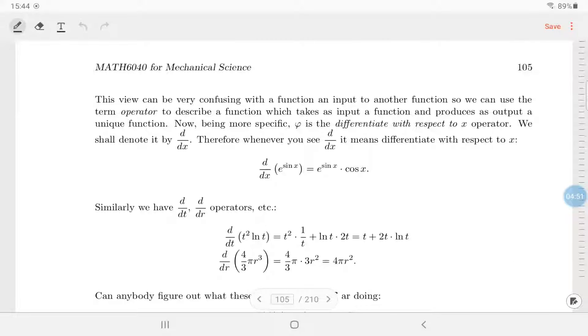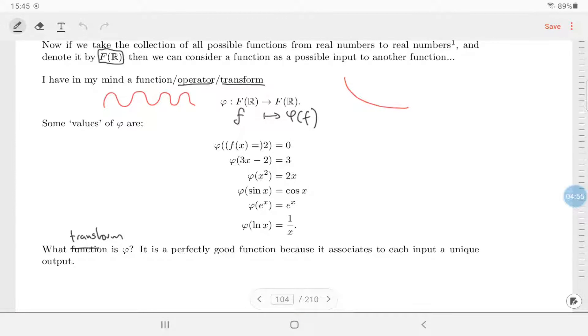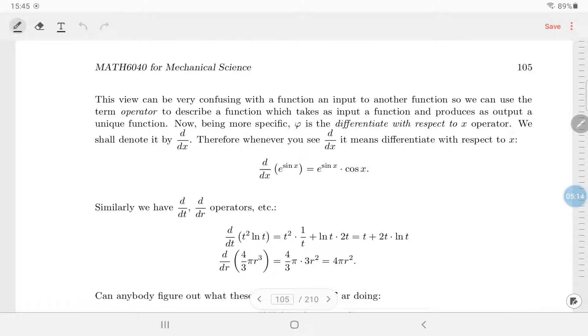Now what function is this? Hopefully some of you recognize that this φ, you could write something like φ is differentiated. But this is what I'm trying to say is not quite precise enough for our needs. This view can be very confusing with a function input to another function, so we use the term operator. I actually like transform now, to describe a function which takes as input a function and produces output. Now to be more specific, we should call φ differentiated with respect to x and we write it like this. So φ is differentiated with respect to x, and whenever you see d/dx it means differentiate with respect to x.